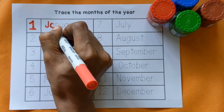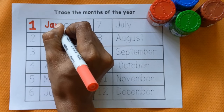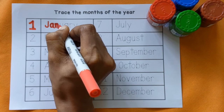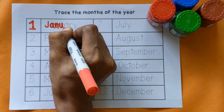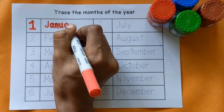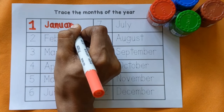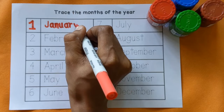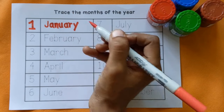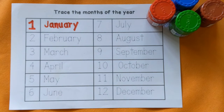1. J, A, N, U, A, R, Y — January, red color.